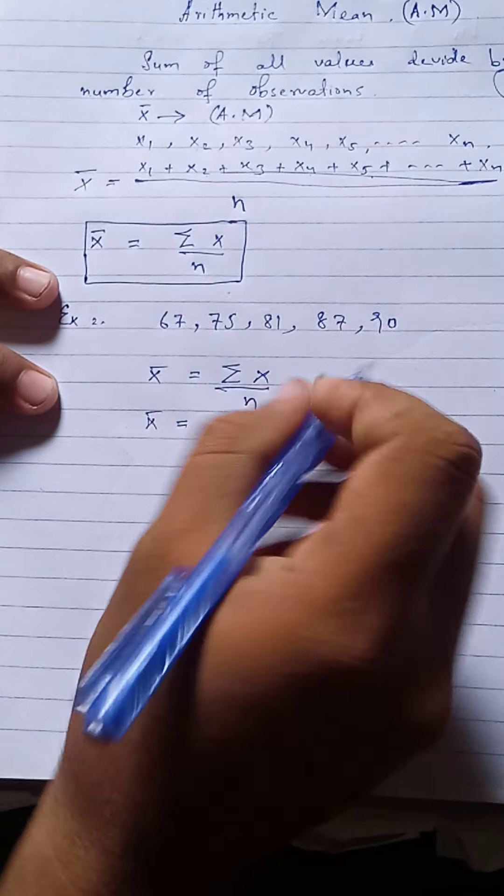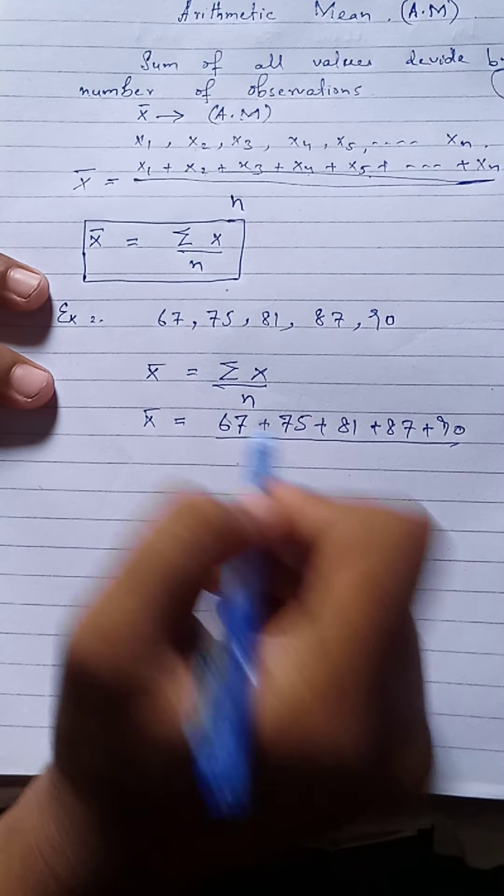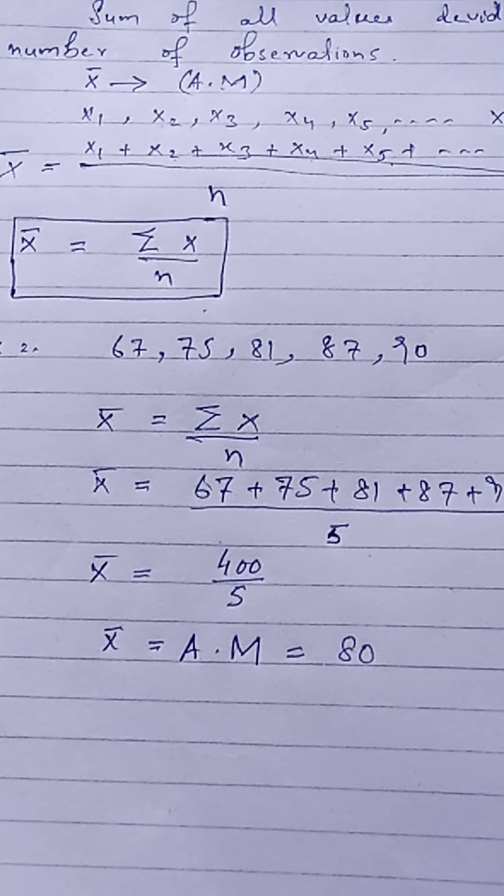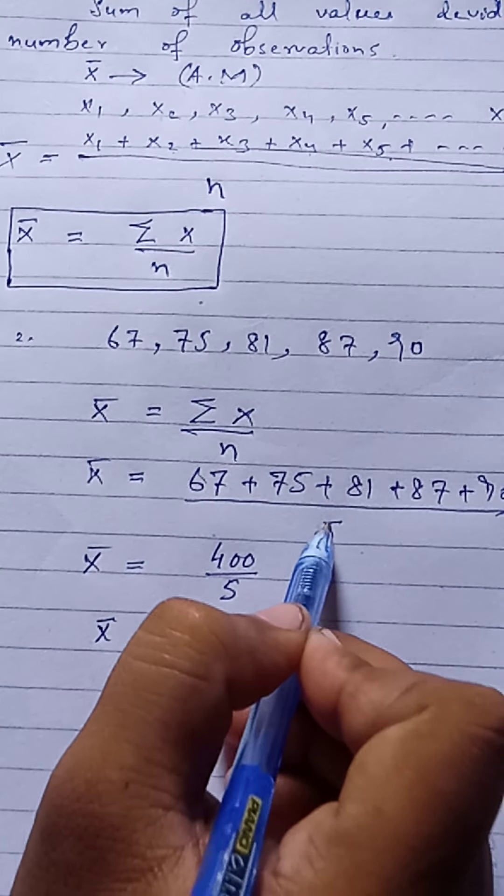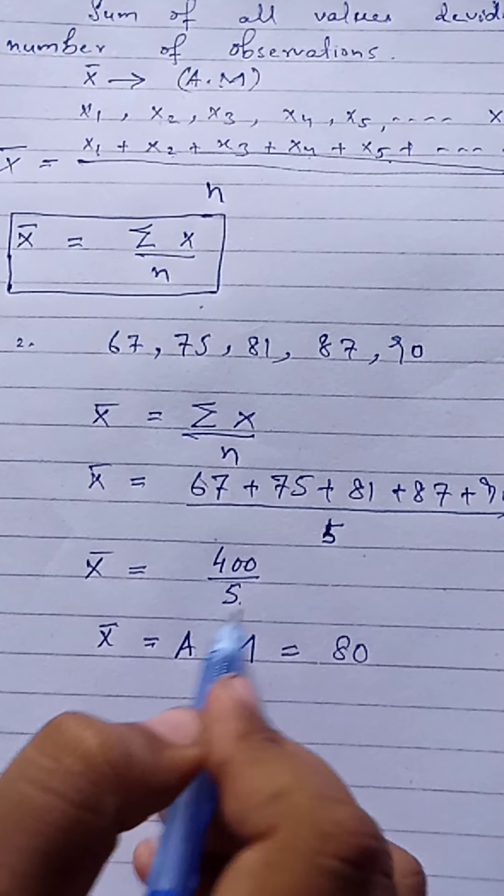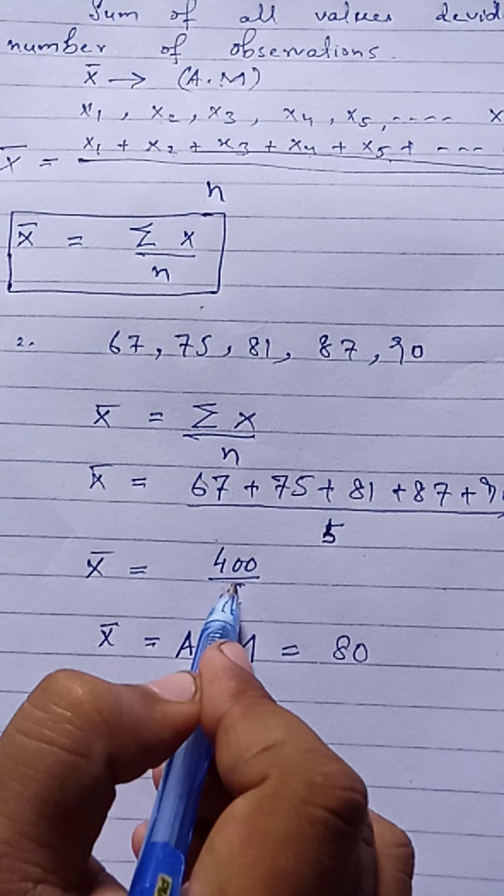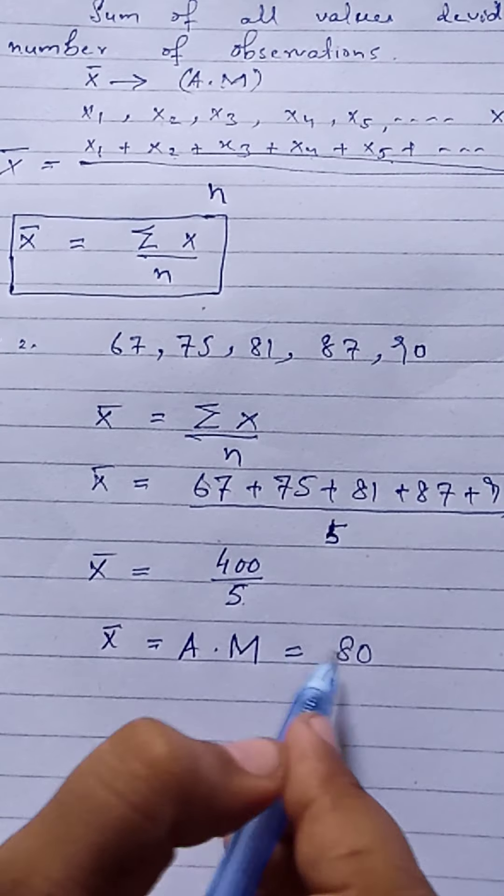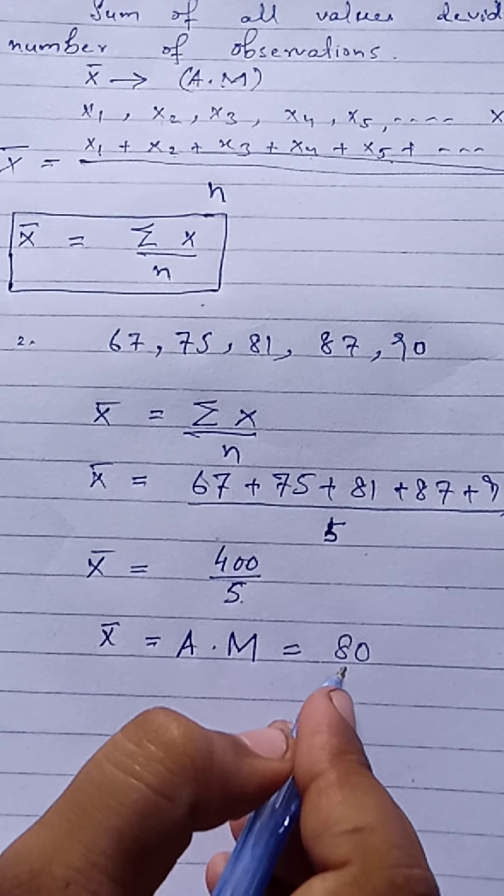अब यह numbers कितने हो गए? 1, 2, 3, 4, 5 - यह numbers पांच हो गए। Divide करेंगे 5 से। यह add करेंगे तो 400 होगा divided by 5. 400 divided by 5 तो 80 होगा। तो arithmetic mean 80 हो गई।